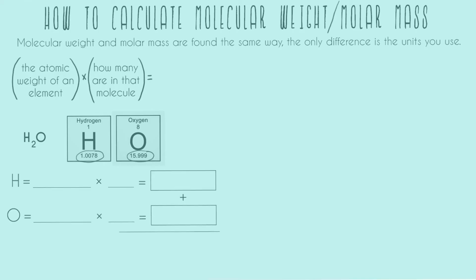I have my formula for each element, and now I'm going to do them all and add them together. So the atomic weight of hydrogen, we just take that from here, 1.0078. And then we use our subscript. This 2 is referring to hydrogen, so it's saying that water has 2 hydrogens. Multiplying together, we get 2.0156.